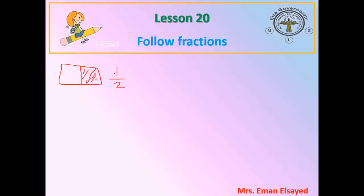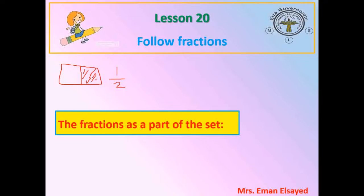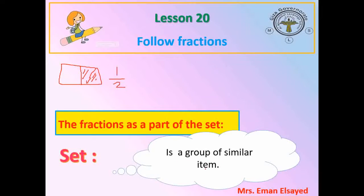Very good. The fraction is half. This is the fraction we took when we have a full shape. Now we will look at a group or a set. What's the meaning of set? A set is a group of similar items — everything in the set is alike. For example, a set of triangles, a set of circles, or a set of cats — the whole group is the same item.